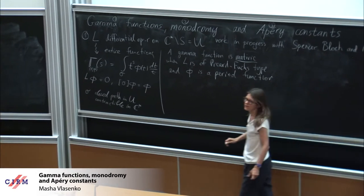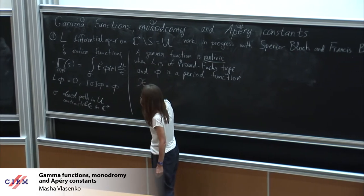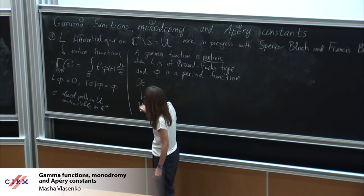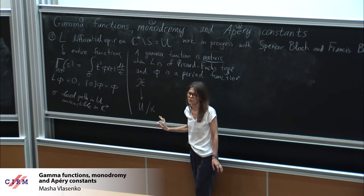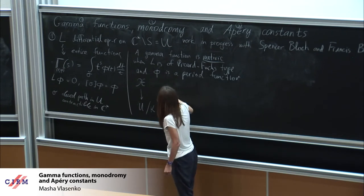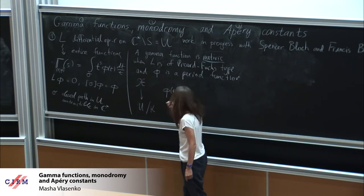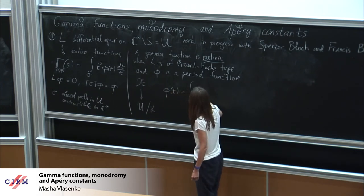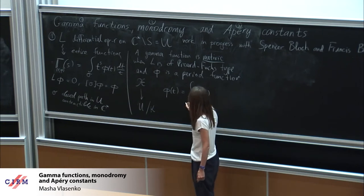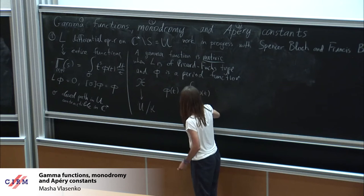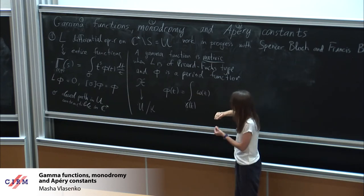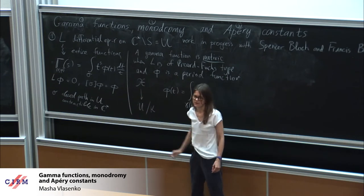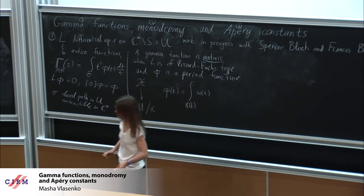By this I mean that there is a family of algebraic varieties over U, defined over a field K, some subfield of the complex numbers. Phi of t, where t is a point on the base, is given by an integral of some de Rham form over a Betti cycle, where this de Rham form and Betti cycle are on the fiber X_t over the point t. Let me give you an example.